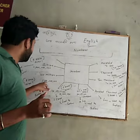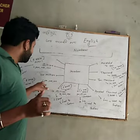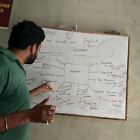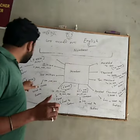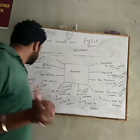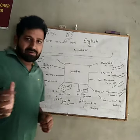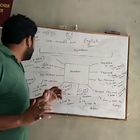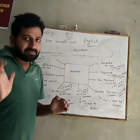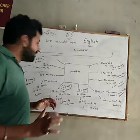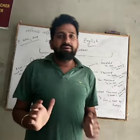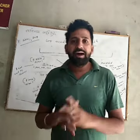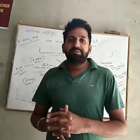Counting the zeros for hundred million: one, two, three, four, five, six, seven, eight — eight zeros after one. Indians use 'ten crore' for this. Next is billion — there are nine zeros after one, and Indians use the word 'Arab' for this.